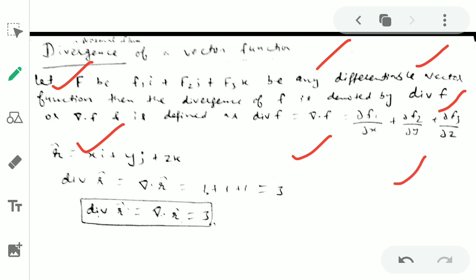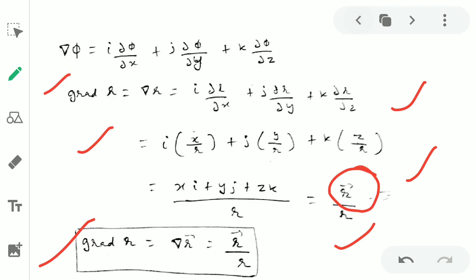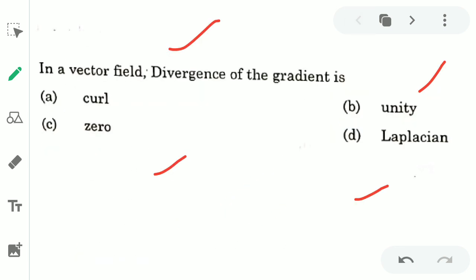So if we assume your R vector is xi + yj + zk, then what will be its divergence? Individually you'll take ∂x/∂x for i component, ∂y/∂y for j, and ∂z/∂z for k. This basically gives 1 + 1 + 1, so divergence is 3. Now let's move to the question.